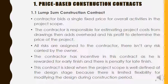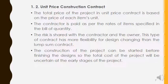The next is unit price construction contract. For example, in government construction of bus stops or platforms where a contractor lays tiles, payment is based on how many meters or square meters of tiles are laid. The total price of the project under a unit price contract is based upon the price of each item in units — either in meter, meter square, or meter cube. The contractor is paid as per the rate of items specified in the bill of quantity, and the risk is shared between contractor and owner.